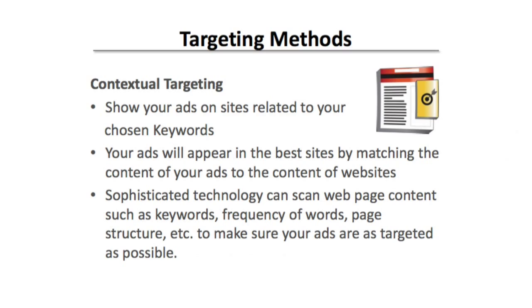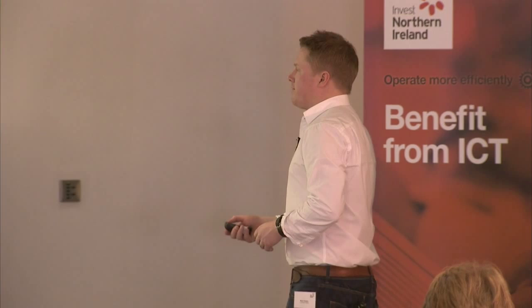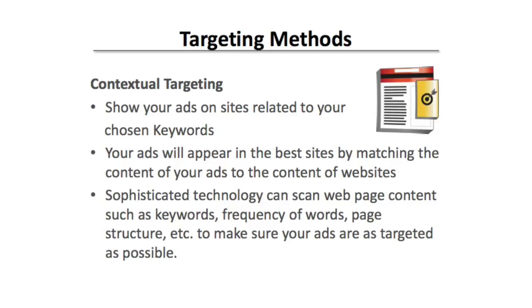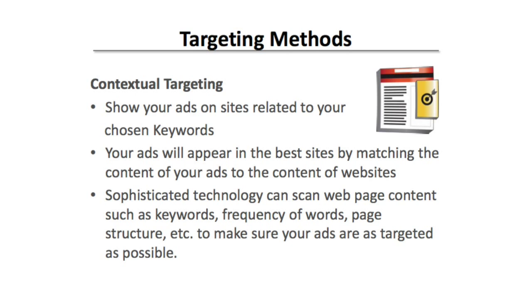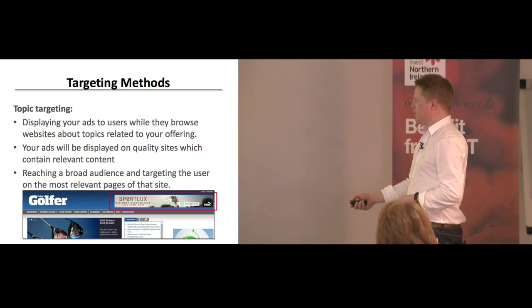Contextual targeting shows your ads on sites related to your keywords. So I picked the keyword 'golf' — it will show my ads on golf-related websites because it's contextually matched. Sophisticated technology scans the web page, looking at keywords and their frequency, to make sure your ads are placed in the right places. You can see on here we have Today's Golfer website with an ad for Puma Golf. That's contextual targeting.